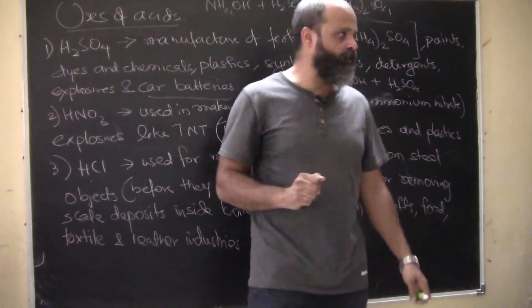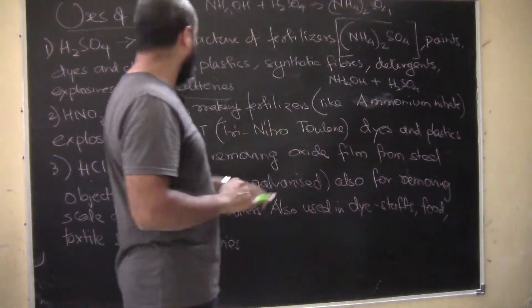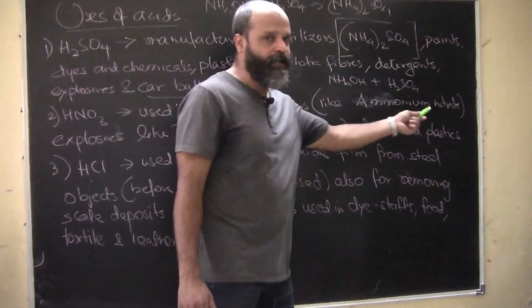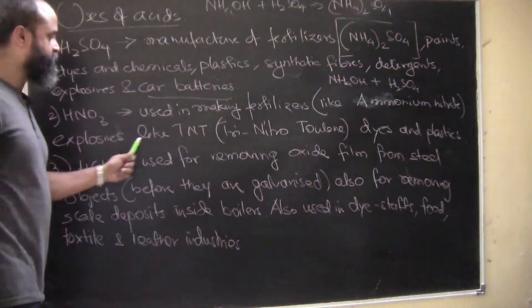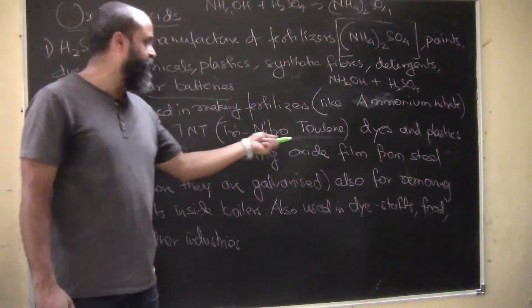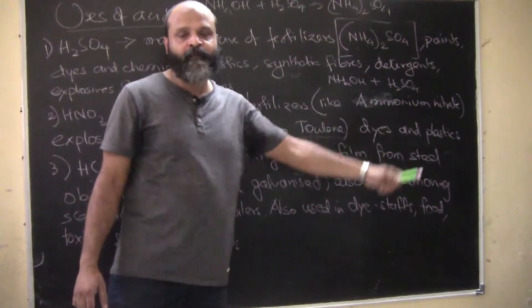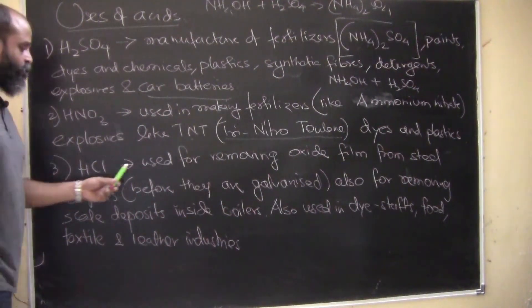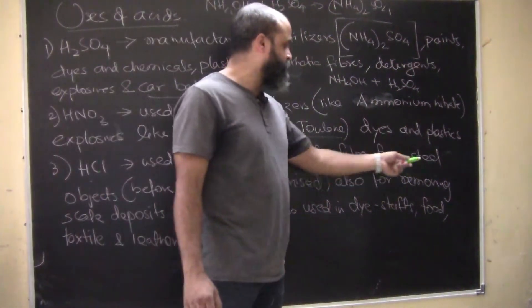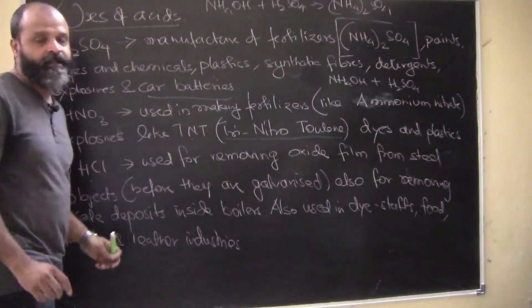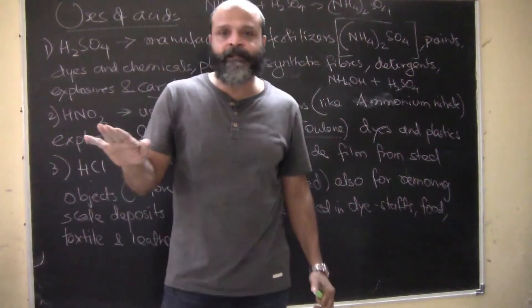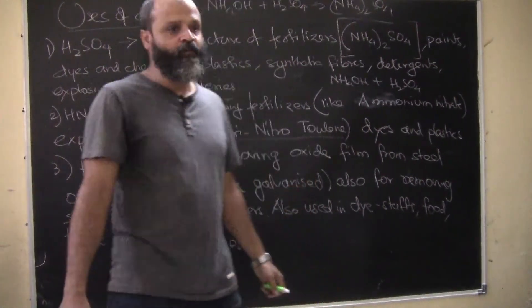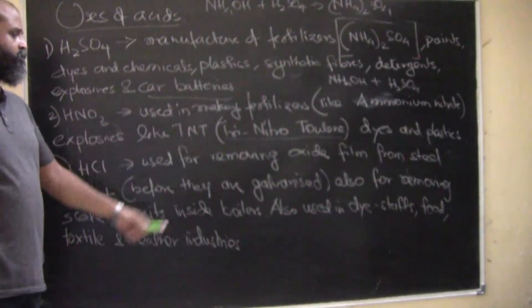Nitric acid (HNO₃) is used in making fertilizers like ammonium nitrate, explosives like TNT (trinitrotoluene), dyes, and plastics.